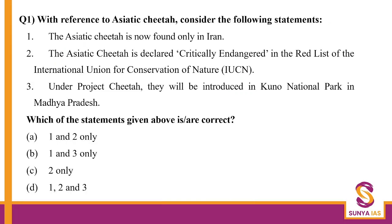Now we begin. Question number one is one of the most expected questions for the exam: the Cheetah Reintroduction Project. You have Asiatic Cheetah in this question, so please read it very carefully. It is asking which of the following statements is correct. Statement one: Asiatic Cheetah is now found only in Iran — absolutely true. Please check whether they are asking you about Asiatic Cheetah or African Cheetah. The Asiatic Cheetah is found only in Iran; it was extinct from India around 1952.